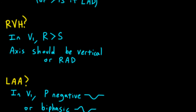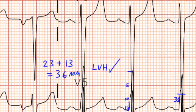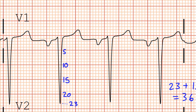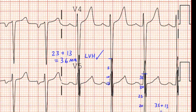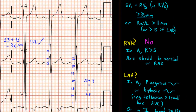Now let's look for RVH. For right ventricular hypertrophy, we look in lead V1 for an R deflection that's greater than the S deflection, and the axis should also be vertical or rightward. Looking in lead V1, the QRS complex is almost totally negative, and we have basically no R deflection. So R is not greater than S, and we don't have signs of RVH.